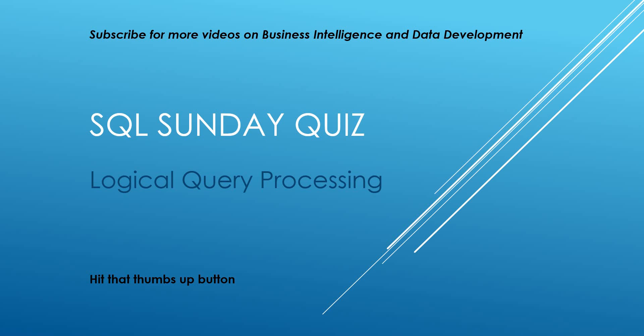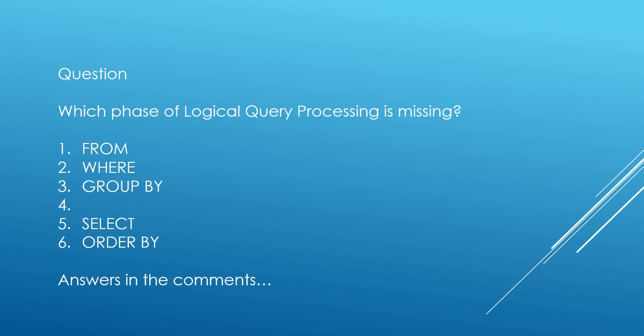We're just going to have a simple question around logical query processing. And believe me, the questions will get harder. So the question: which phase of logical query processing is missing? We have number 1 as FROM, number 2 as WHERE, number 3 as GROUP BY.